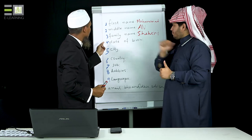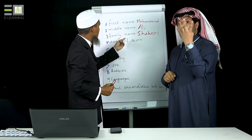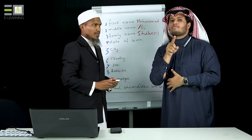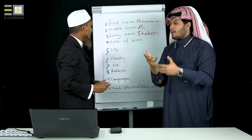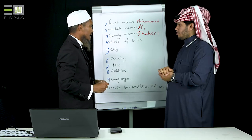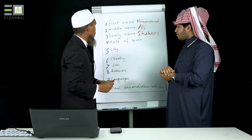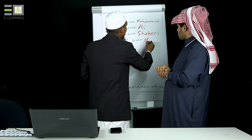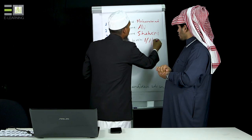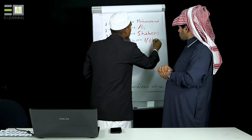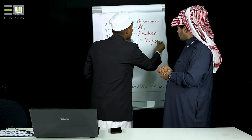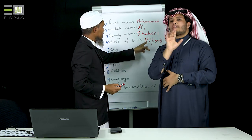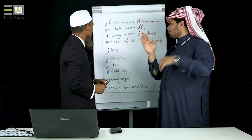Point number four is date of birth. Date of birth means when were you born? In Arabic, it is called Tarikh Al-Milaad. For example, maybe you were born on 1/1/1998. This is the day, this is the month, and this is the year that you were born.